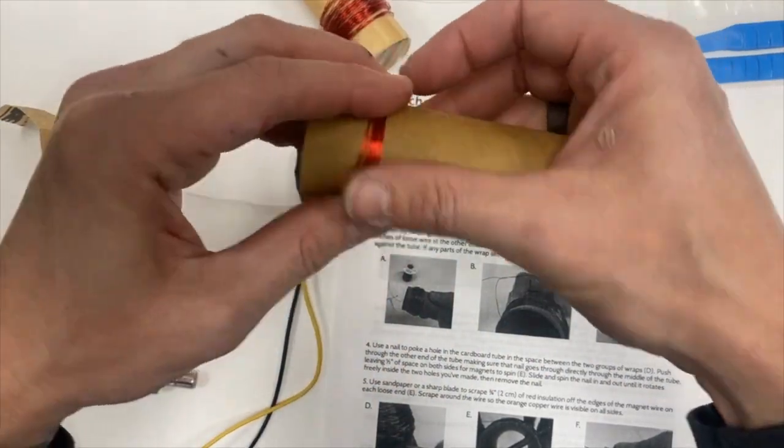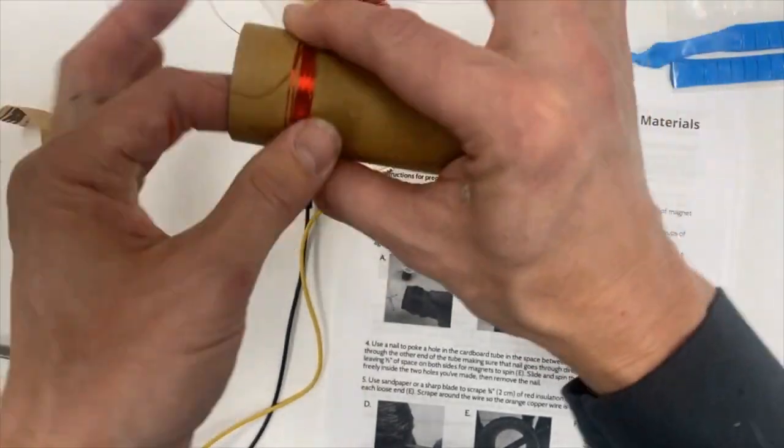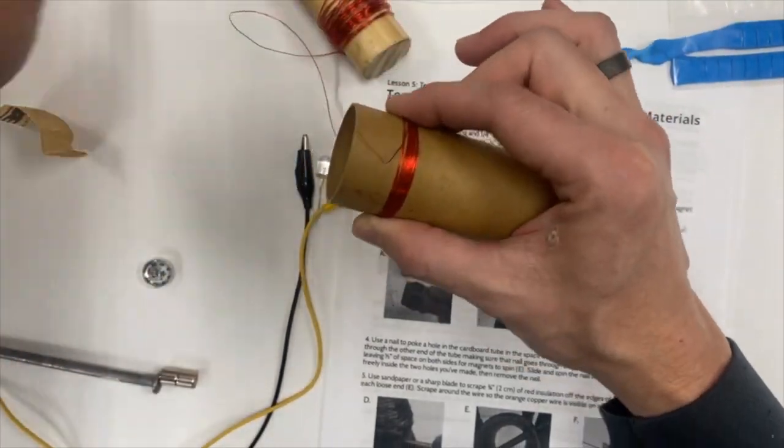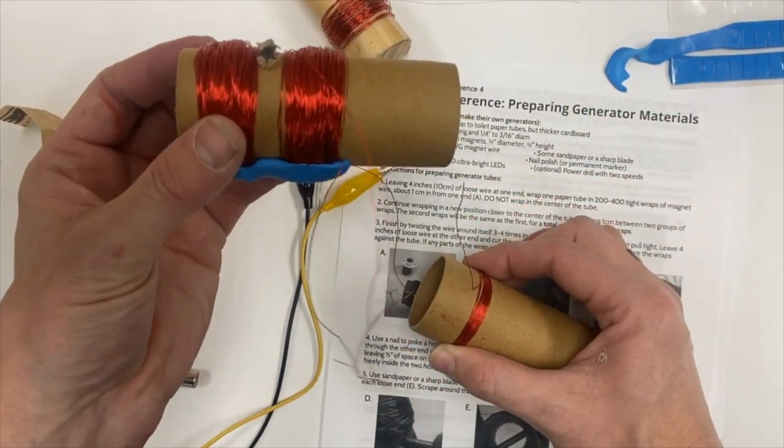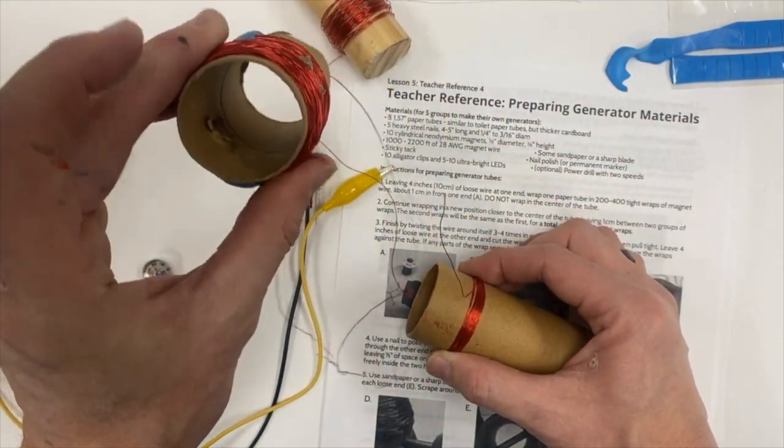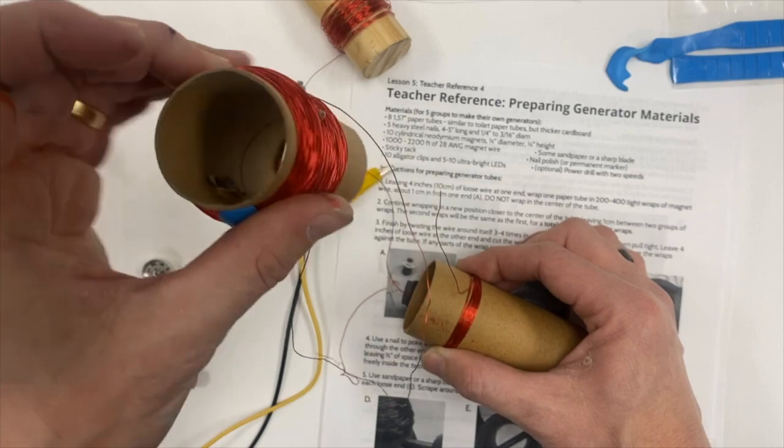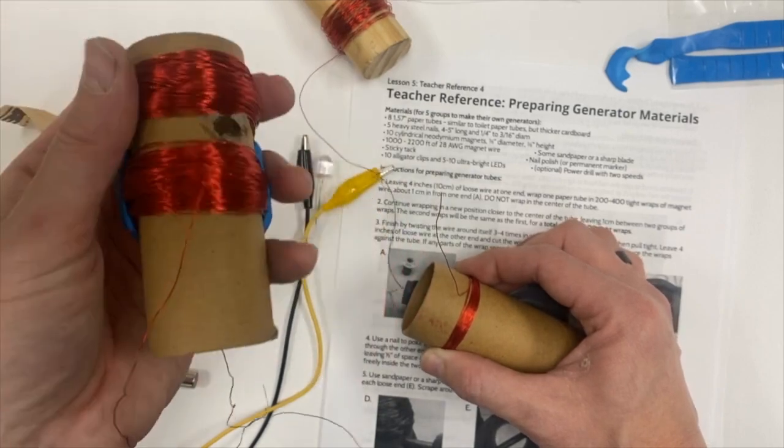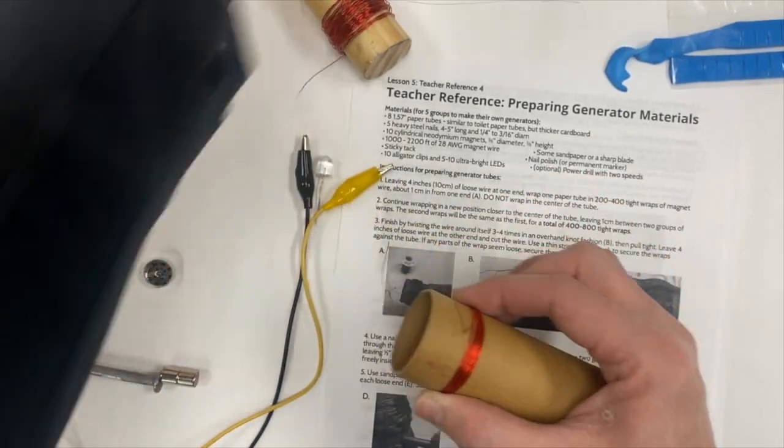Notice I'm starting my wrap pretty close to the end of one tube, not in the middle of the tube. Ultimately I'm trying to make something like this, and it's much easier for students to access the important pieces like the magnets and the nail if it's all closer to one end.